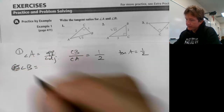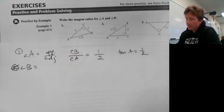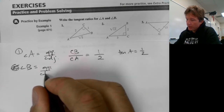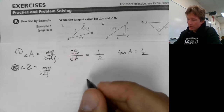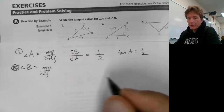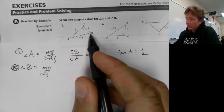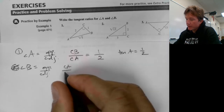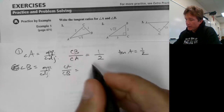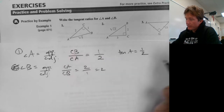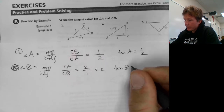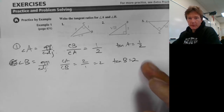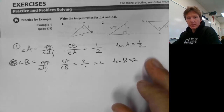Angle B is down here. Remember how I said tangents can be larger than one, because the hypotenuse is not a factor in this. The opposite side will be CA. The adjacent side will be CB. So that will be two over one, which equals two. So tangent of B equals two. Notice how these are reciprocals of each other — that's an important thing to keep in mind.